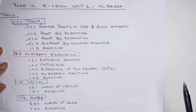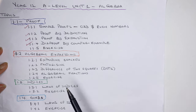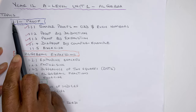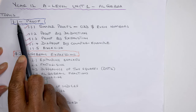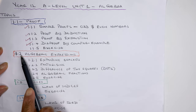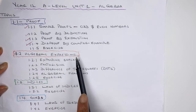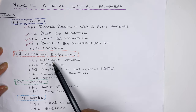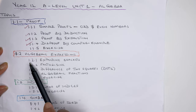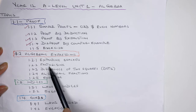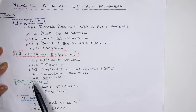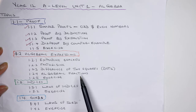Welcome to STEM School. Today we'll be looking at section 1.2. We've finished with 1.1 proofs. Now we're looking at algebraic expressions. Topics we'll be covering are expanding brackets, factorizing, difference of two squares, algebraic fractions, and some exercises.